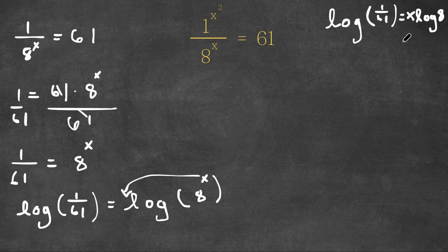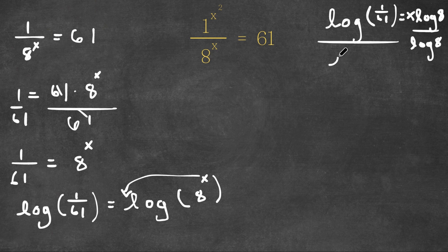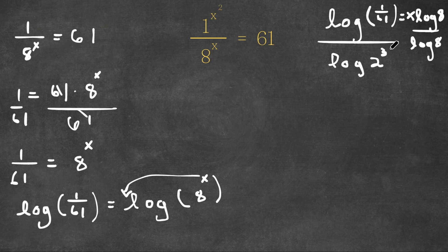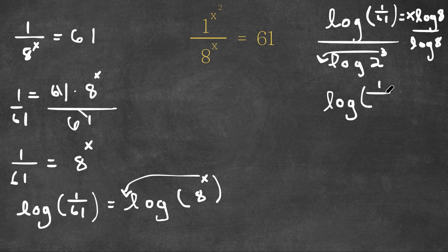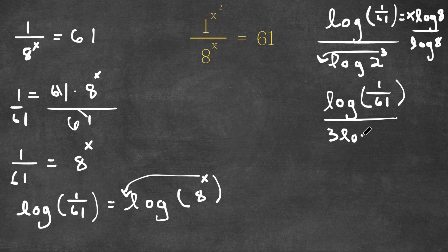Now I'm going to divide both sides by log 8. Note that 8 is the same thing as 2 to the power of 3, so log 8 equals log 2 to the power of 3. Remember the power property of logarithms — we can move this exponent to the front, giving us 3 log 2. So now we have log 1 over 61 divided by 3 log 2.